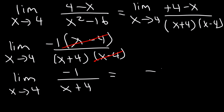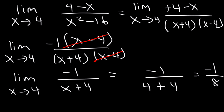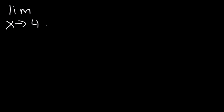Using direct substitution: negative 1 over 4 plus 4 equals negative 1 over 8. So the answer is negative 1 divided by 8.